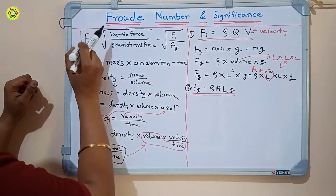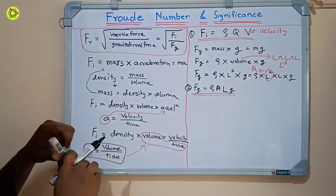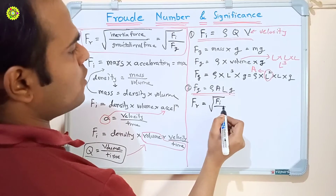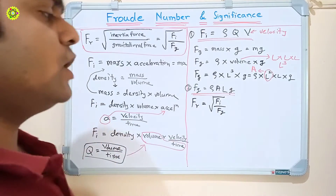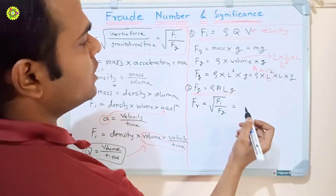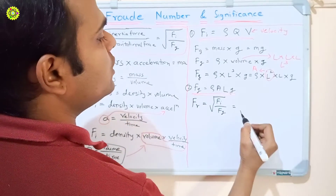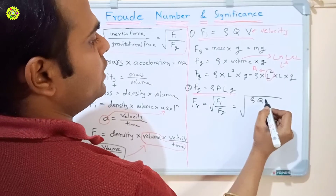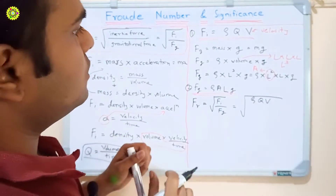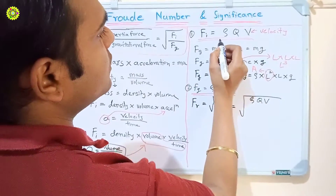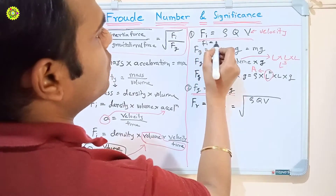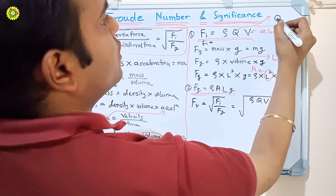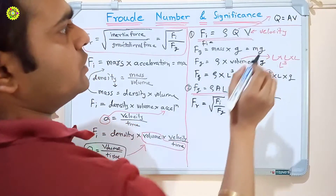Now we put both values of inertia force and gravitational force into the Froude number equation. Fr equals the square root of Fi upon Fg. Substituting Fi as rho·Q·V, and using Q equals A·V from the continuity equation, we can simplify Fi further as rho·A·V-squared.